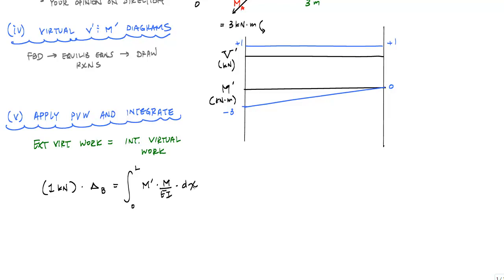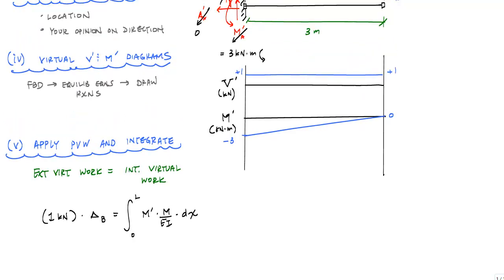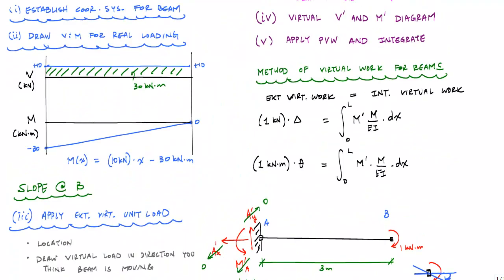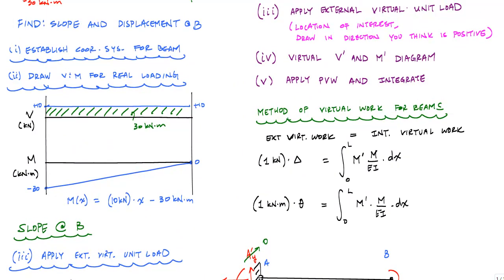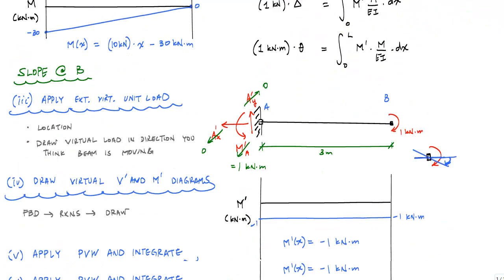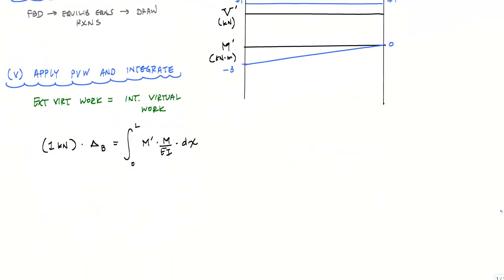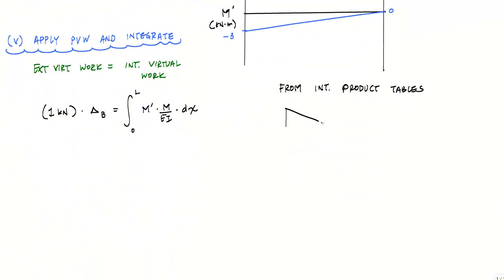Looking at these moment diagrams, I've got a triangle for the virtual moment, and going back here to the real moment diagram, I have another triangle. If I look at my product tables, my integration product tables, I will be able to quickly identify that when I have a triangle and a triangle, this integral, this product is one-third ABL.